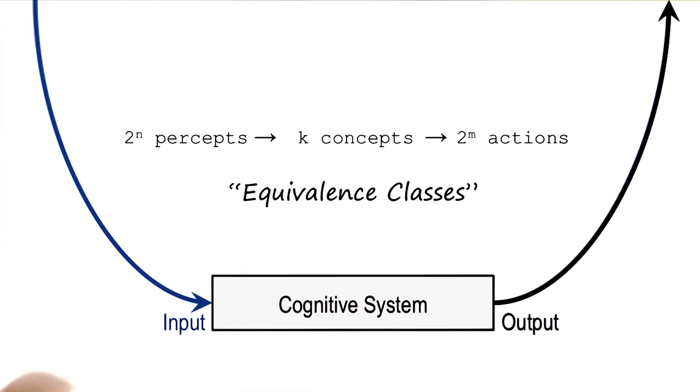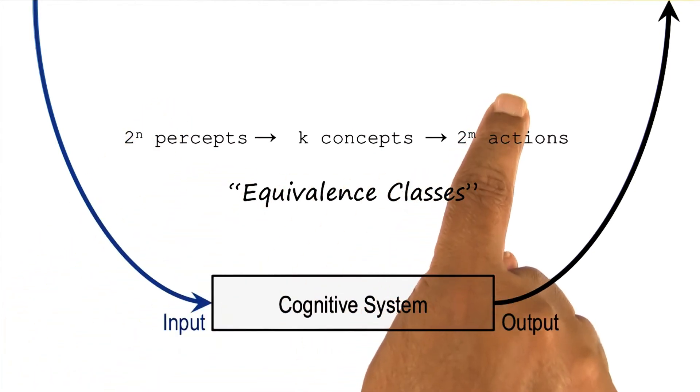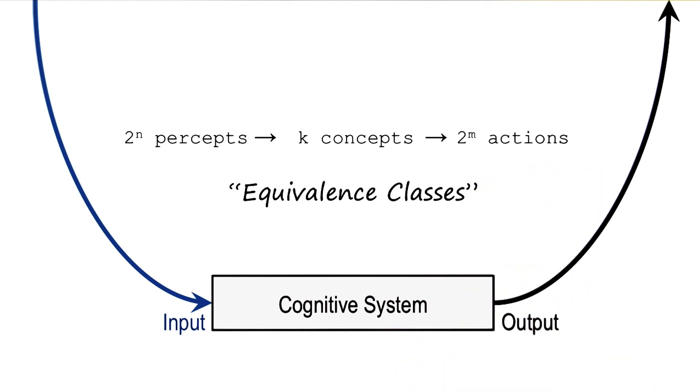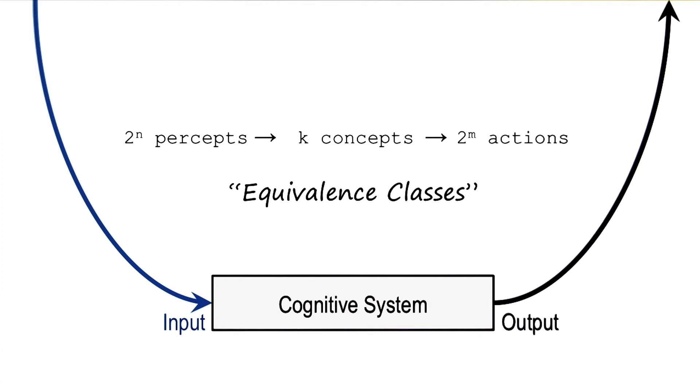If there were no concepts, we were mapping this 2 to the power n combinations of percepts to actions, then we could think of an intelligent agent as one large giant table. The rows of the table are all the 2 to the power n combinations of percepts, so there'll be that many rows. And the columns are 2 to the power m actions. Given a percept, I know exactly what action to take, the table tells you that. And it's going to be a very large table. We don't know how to use it, it'll be very costly to use it. And we don't know how to build such a table.